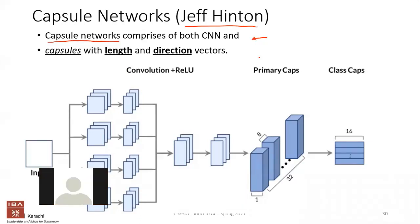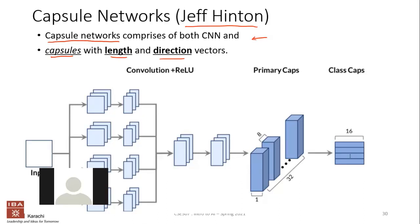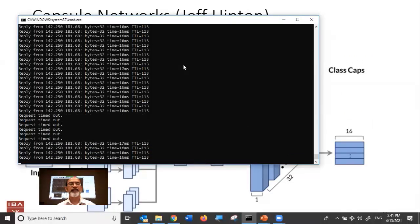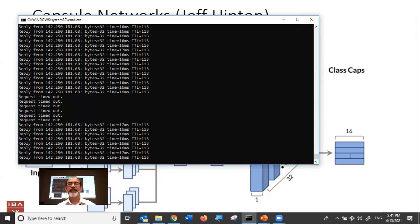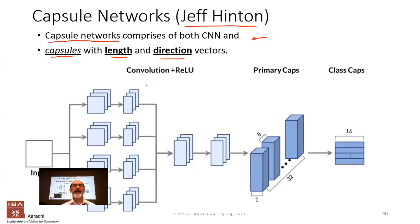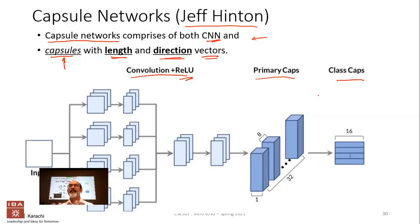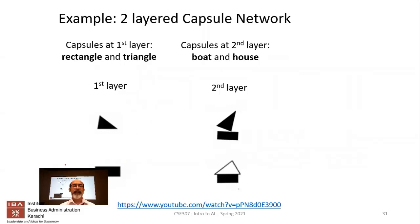In a capsule network, you use the concept of a vector, which consists of a length and a direction, and these are called capsules. The capsule network also uses CNN — so it uses both CNN and vectors. Here's your convolutional network with ReLU, and then it has primary capsules, secondary capsules, and these are layered, just like in deep neural networks we have series of layers. We'll now look at a very simple two-layered capsule network example.